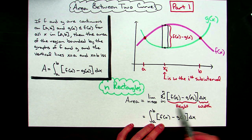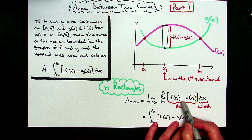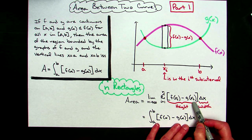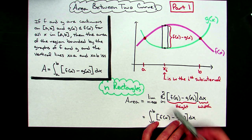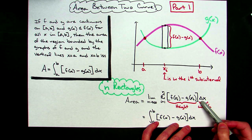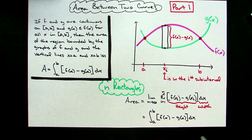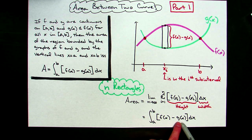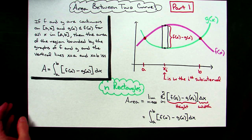For each rectangle, I need to take the height times the width. So f of x sub i minus g of x sub i gives me the height of each rectangle — the first, second, third, fourth — and then delta x is the width of each rectangle. As I take the limit of this sum, I get the integral from a to b of f of x minus g of x dx. You also have to think of the integral sign as an accumulator — it is accumulating the area of each one of those rectangles to get the actual area between those two curves.